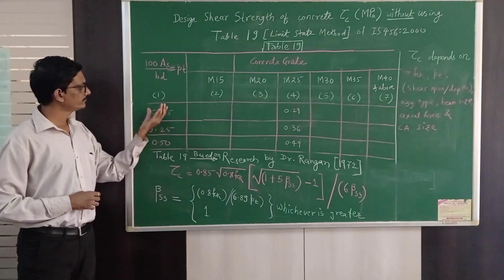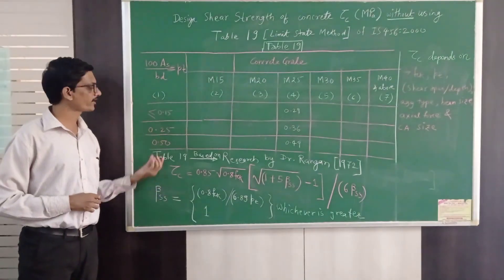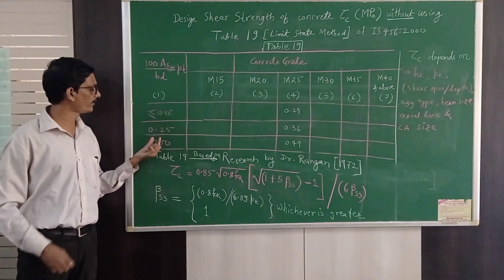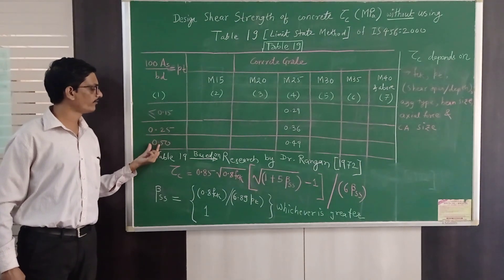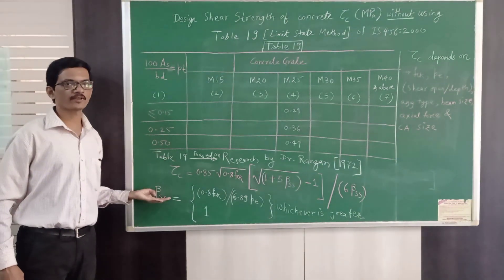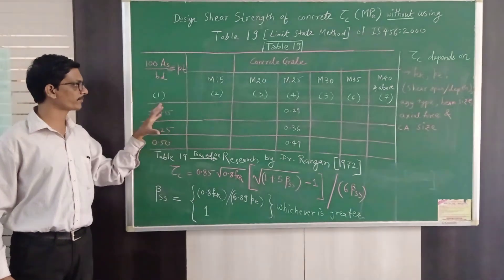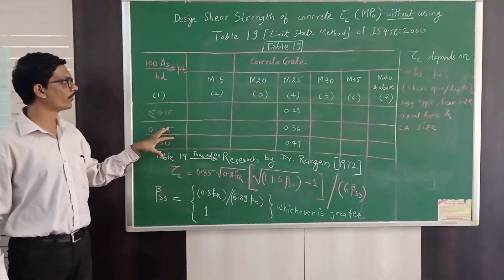In this table number 19 they have given various percentages, for example less than or equal to 0.15, 0.25 percent, 0.5 percent. It is up to 3 percent and above but here for demonstration purpose I have only shown few values.